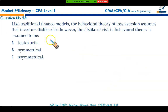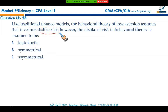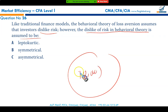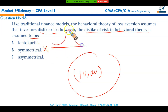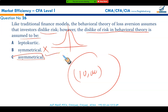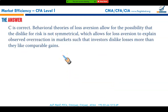Like traditional finance models based on expected value and risk neutrality, the behavioral theory of loss aversion assumes investors dislike risk. However, in behavioral theory, this dislike of risk is asymmetrical — the disutility of loss is considered greater than the utility of gain. It is not symmetrical like a leptokurtic distribution; it tends more toward one side, making option C the correct answer and concluding the reading on market efficiency.